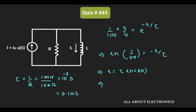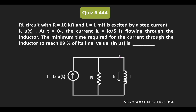That means T is equal to 0.1 microseconds times ln(80). If we calculate the value, this T comes out as 0.438 microseconds. That means this is the minimum time after which the current of the inductor will reach 99% of its final value. So for the given circuit, the time T is equal to 0.438 microseconds.